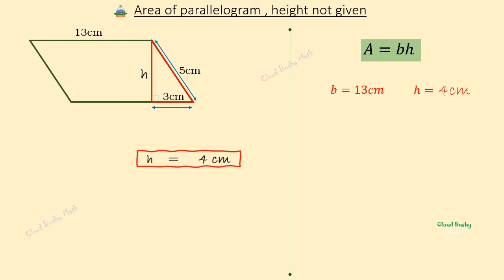Now we can find the area of the parallelogram. The area of a parallelogram is equal to the length of the base times its perpendicular height. The base of this parallelogram is 13 centimeters, and we multiply this by the height of 4 centimeters. That gives us 52 square centimeters. So the area of this parallelogram is 52 square centimeters.